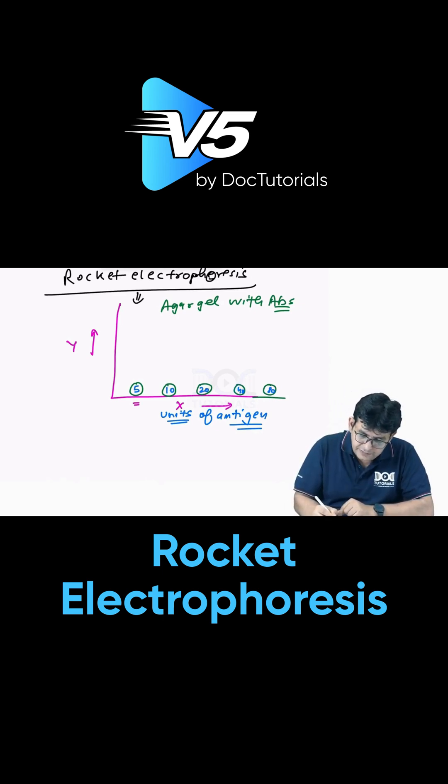After putting this, you run electricity because electrophoresis or pharesis is there. When you run the electricity, you observe formation of rockets like this.